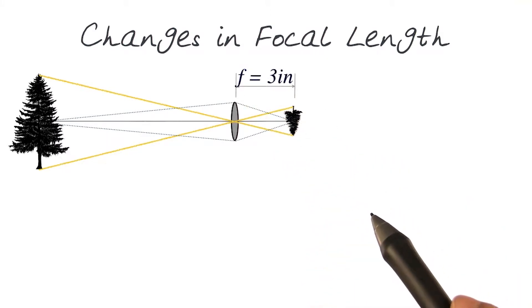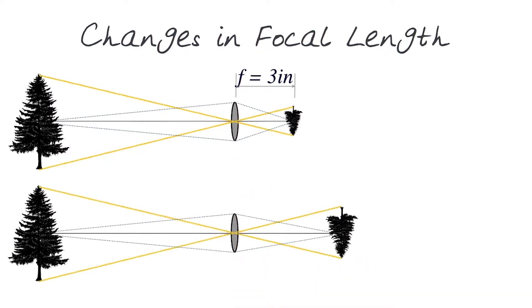Of course, let's assume that this lens has a focal length of 3 inches. This time around, I'm only going to change the lens to another one with a different focal length. So now we have another lens. This lens has a focal length of, say, 6 inches.